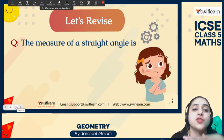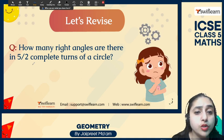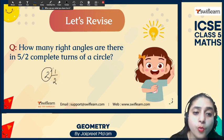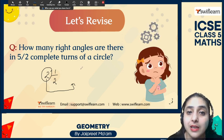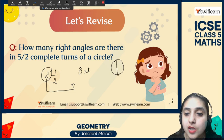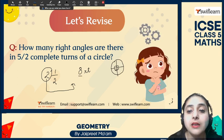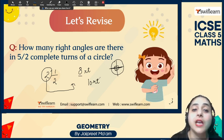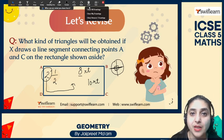Another question: how many right angles are there in five over two complete turns of a circle? We can write it as a mixed fraction — two and a half. Two complete turns means eight right angles, plus half a turn which adds two more. So there will be ten right angles in five over two complete turns of a circle.